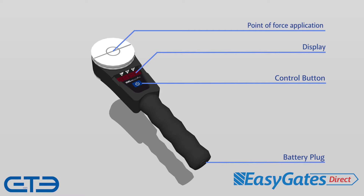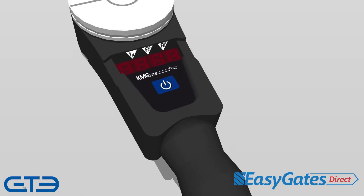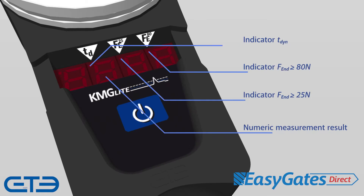Moving in closer to the control panel, there are four main points of interest used for extrapolating your data. The numeric measurement results are displayed on screen with four numeric indicators. Next to these are measurement indicators represented by four dots — only three of them are crucial to your results, more on that later.